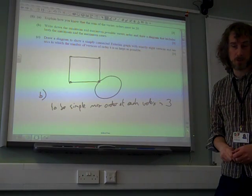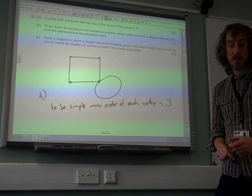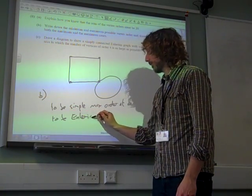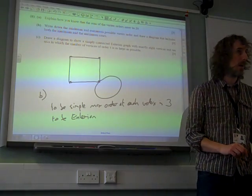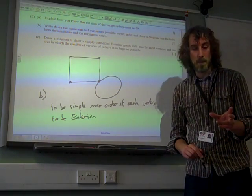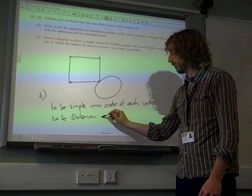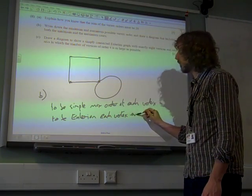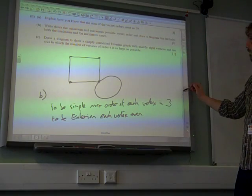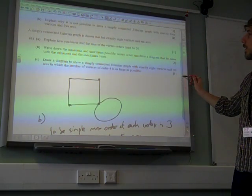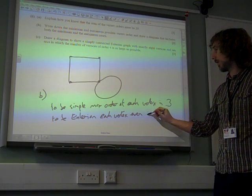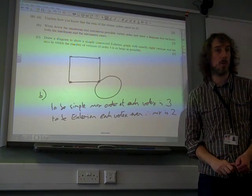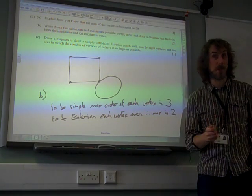We'd have multiple arms doing stuff. For it to be Eulerian, every vertex must be even. So the max at each vertex is two. In fact, they all have to be two, don't they?